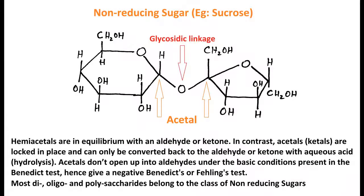In most disaccharides, oligosaccharides, and polysaccharides, the monosaccharide units are linked together by glycosidic linkage formed between the hydroxyl group of one and the anomeric carbon of others. As a result, free anomeric carbons are unavailable to reduce cupric salts, and hence these types of carbohydrates are known as non-reducing sugars and therefore impart a negative test with Fehling's reagent.